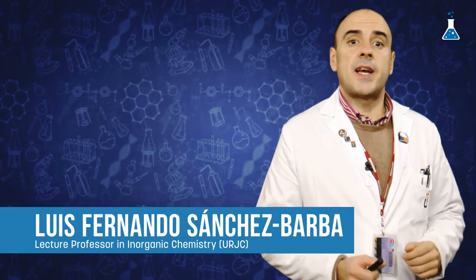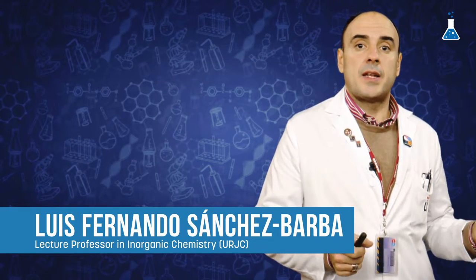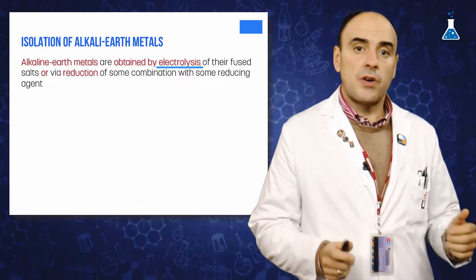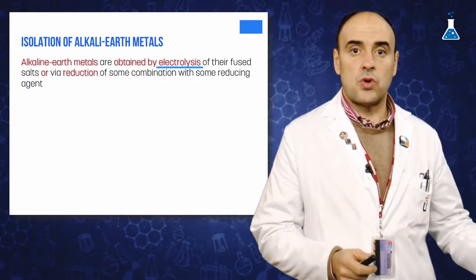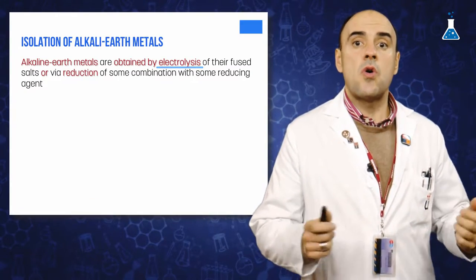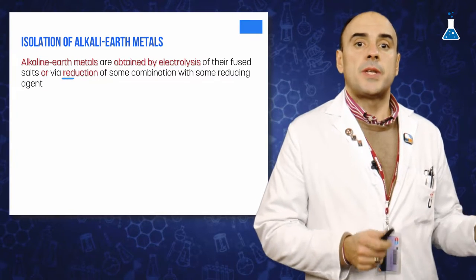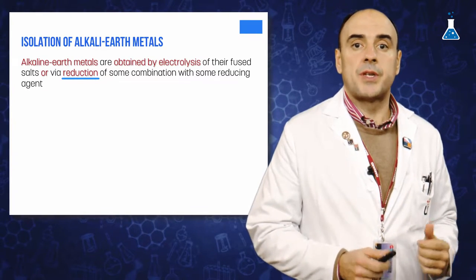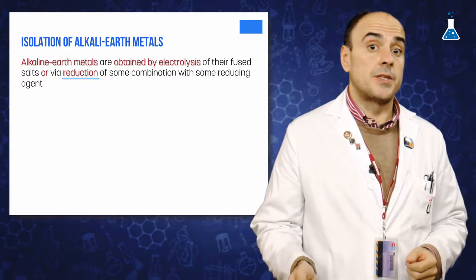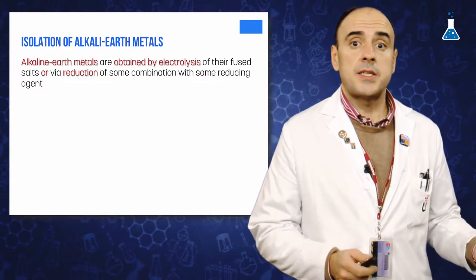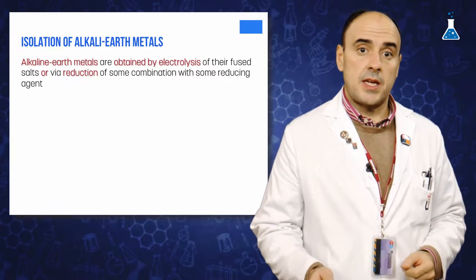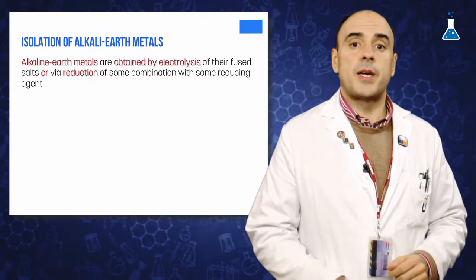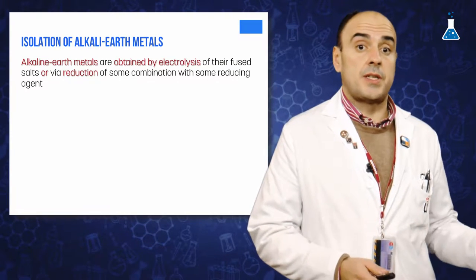The production of alkaline earth metals is carried out by electrolysis of their fused salts or via reduction of their compounds with some reducing agents. Let's examine in detail the major methods of production of these metals.